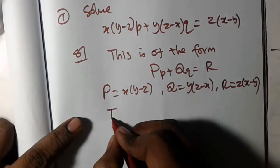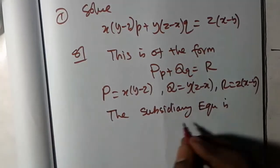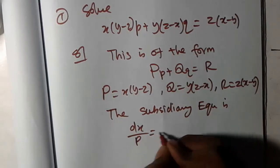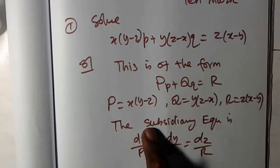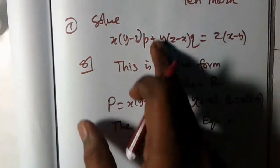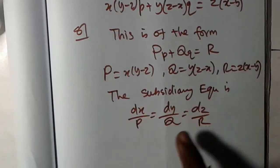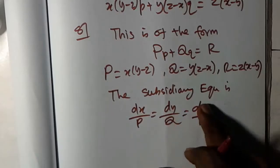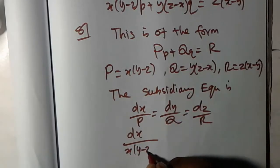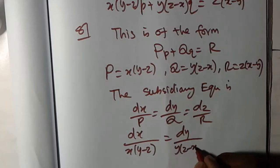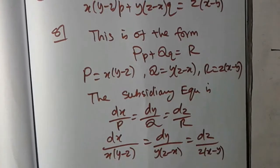Here we have the subsidiary equation. The subsidiary equation is dx by P, dy by Q, dz by R. Sometimes we write two models. Write the subsidiary equation — this is the form P, Q, R, that is capital P, capital Q and R. The subsidiary equation formula is dx by P, dy by Q, dz by R. Here P is the form P(x, y minus z), Q is y(z minus x), and R is z(x minus y). This is 2 to 3 marks.